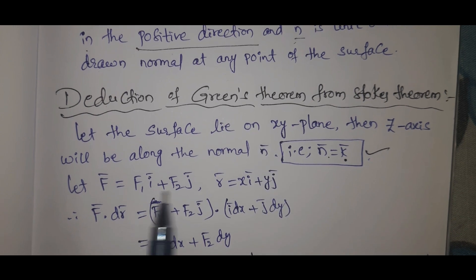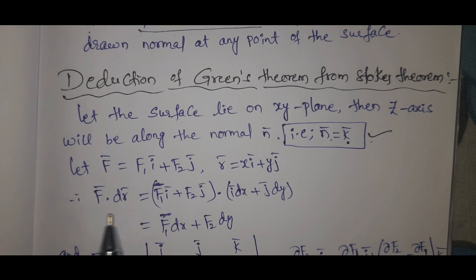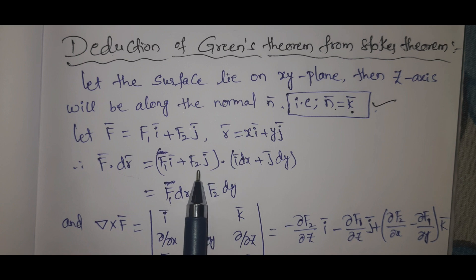Let F bar equal to f1 i bar plus f2 j bar. r bar equal xi bar plus yj bar. In the xy plane, we have xi bar plus yj bar. What is z? Zero. F bar dot dr bar - F bar is here, dr bar is idx plus jdy. Here is i bar dot i bar, j bar dot j bar.